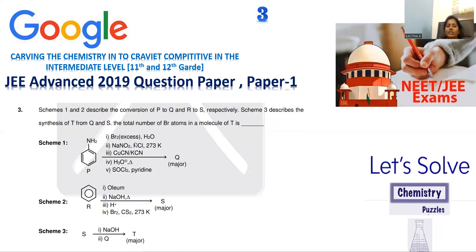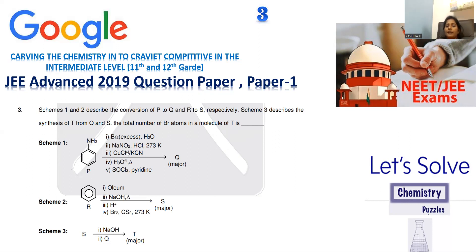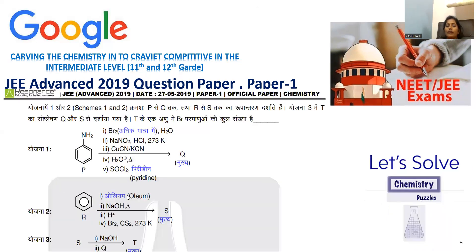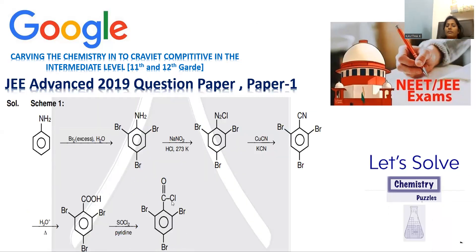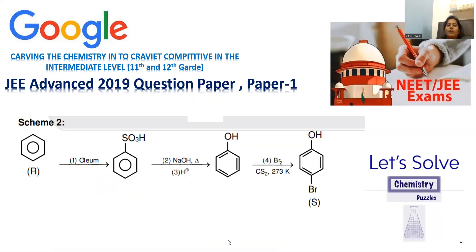In scheme one, each reaction proceeds individually in division. After getting each product, you move to the next step — do not mix all the reagents together. One by one treatment, one by one product formation is needed to achieve Q. Summary: aniline treated with bromine gives tribromoaniline; further diazotization gives benzene diazonium chloride; treating with cyanide replaces NH2 with CN; later hydrolysis converts CN to COOH; COOH with thionyl chloride generates COCl. All individual steps are simple but logical in nature.